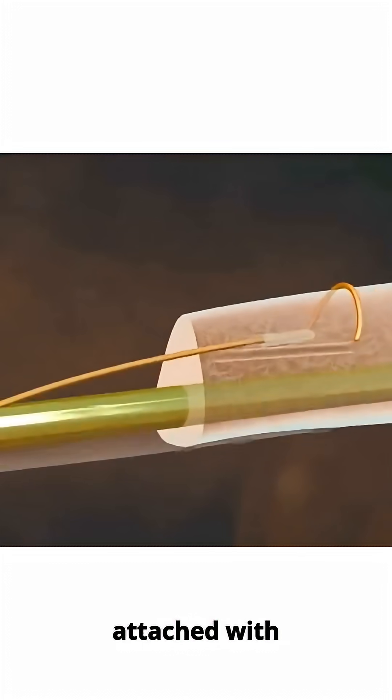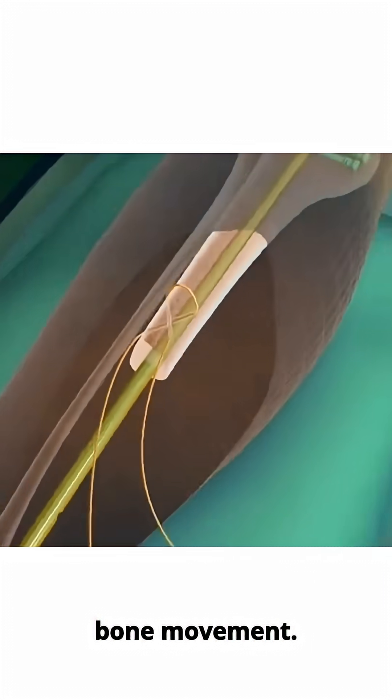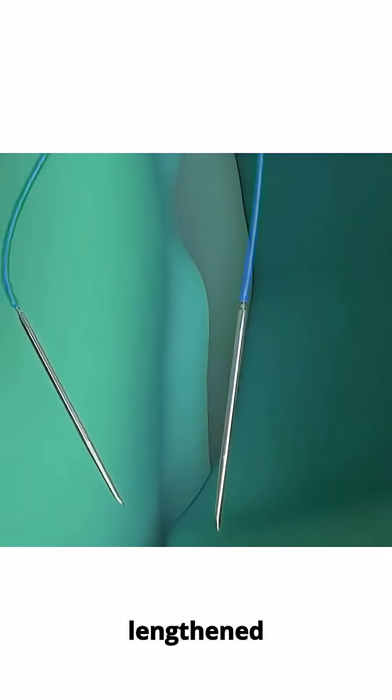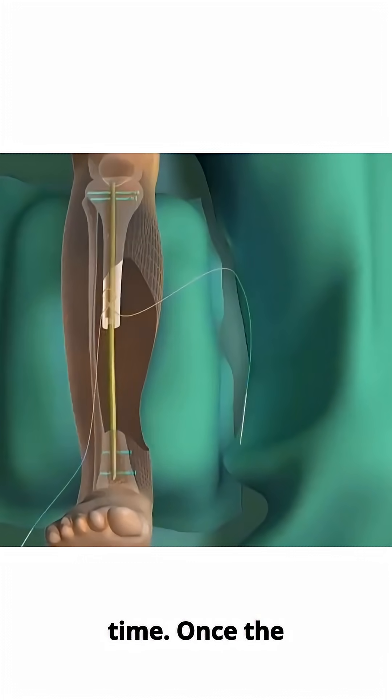A circular fixator is attached with pulleys to control the bone movement. Using the blue clickers, the bone is slowly lengthened 0.25 mm at a time.